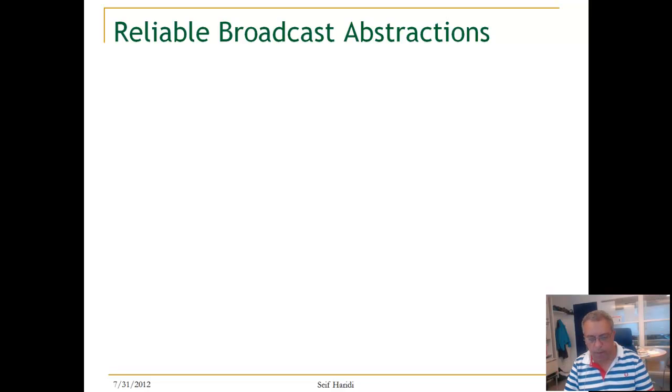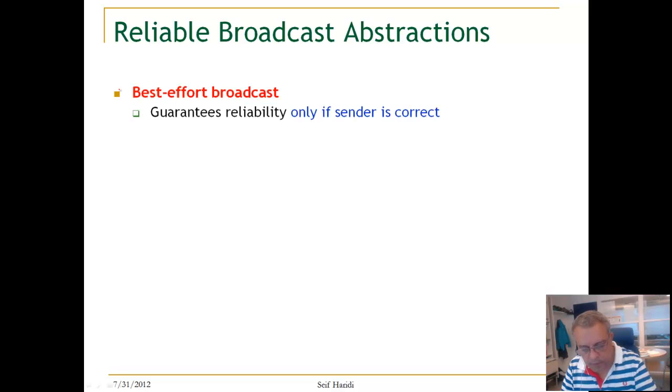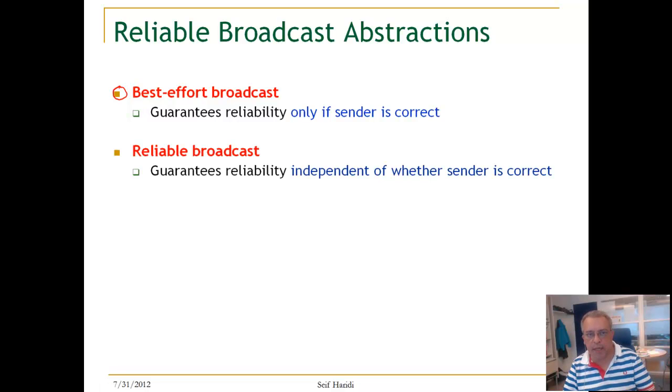So there are many different reliable broadcast abstractions. A best effort abstraction guarantees that the message is delivered only if the sender is correct, it did not crash. One more step in reliability is what we're going to call reliable broadcasts, which guarantees reliability independent of whether the sender have failed after it initiated the broadcast or not.